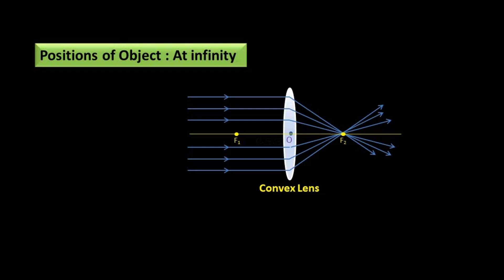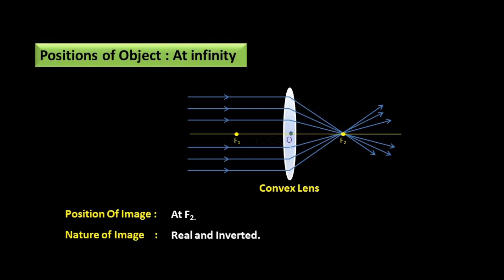All the refracted rays meet at a single point. The position of image is at focus F2. The nature of image is real and inverted, and the size of image is highly diminished.